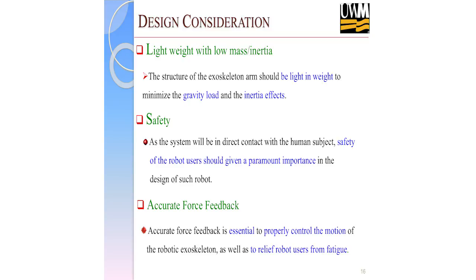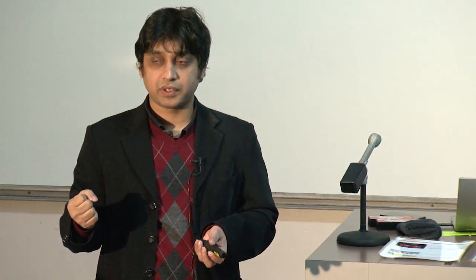Accurate force feedback is another important requirement, because the robot will be used for passive, active-resistance, and active rehabilitation. There should be force sensors or EMG sensors. If there is a delay with the force sensing or feedback, the patient will try to move the robot but it will just push back instead of helping. So accurate force sensor feedback is really important to help patients for motion assist as well as active rehabilitation.